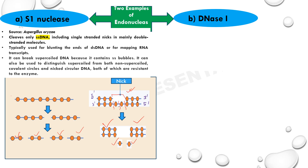S1-nuclease can break supercoiled DNA because it contains single-stranded bubbles. It can also be used to distinguish supercoiled from non-supercoiled covalent circles and nicked-circle DNA, both of which are resistant to this enzyme.